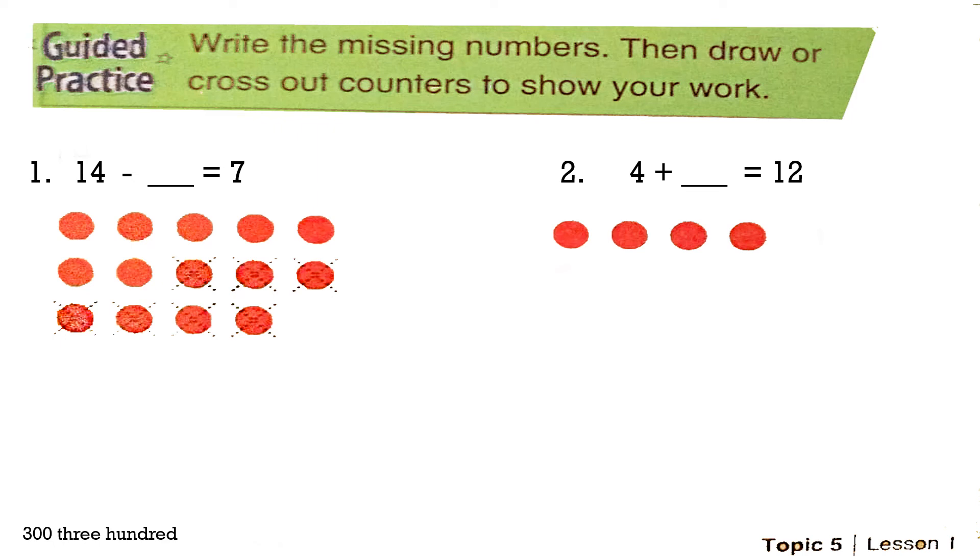Number 2: 4 plus a missing number equals 12. Now I have to count on from 4 till 12 by adding counters. What is the missing number? Yes, it's 8. So, 4 plus 8 equals 12.